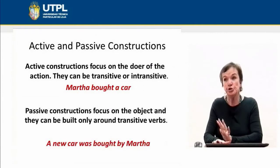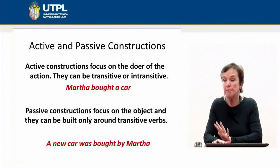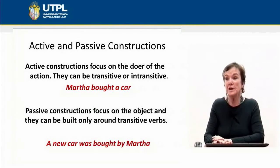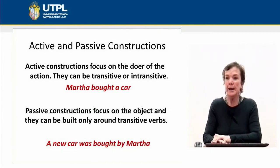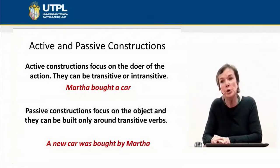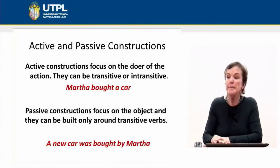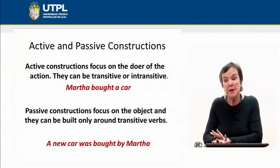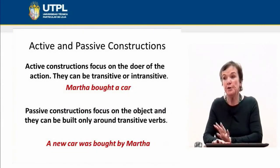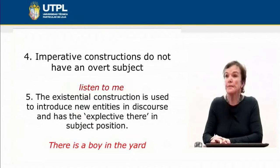On the other hand, passive constructions focus on the object and they can be built only around transitive verbs. Intransitive verbs take complements. Look at the example: 'A new car was bought by Marta.' Here, 'a new car' is in subject position — it is the grammatical subject. 'Was bought by Marta' — Marta is the agent because, even being after the preposition 'by,' Marta is the performer of the action of buying.